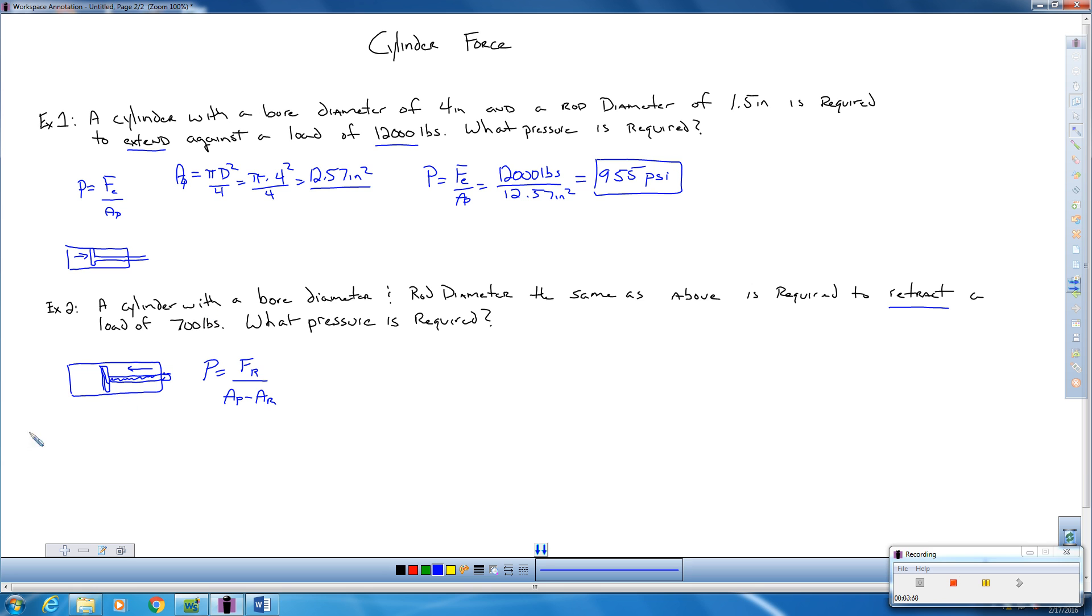Up above we calculated the area of the piston here, I'm just going to rewrite it as 12.57 inches squared. If we calculate really quickly the area of the rod, the area of the rod is pi times 1.5 squared divided by 4. That ends up giving us 1.77 inches squared. Always make sure we're in the same units here.